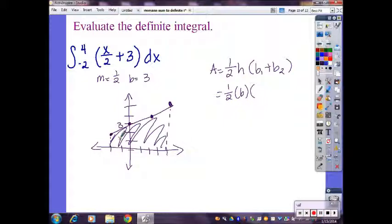Add the height of the bases together, so the base here has a height of 2, and the base over here has a height of 5, so that would be 2 plus 5.